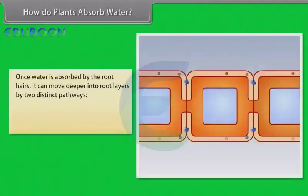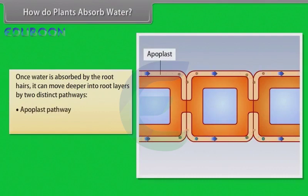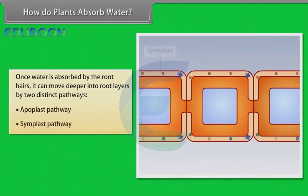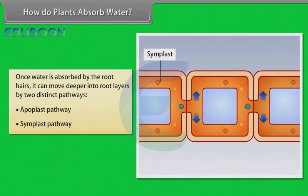Once water is absorbed by the root hairs, it can move deeper into root layers by two distinct pathways: the apoplast pathway and the symplast pathway. We will know them in detail in the next few screens.